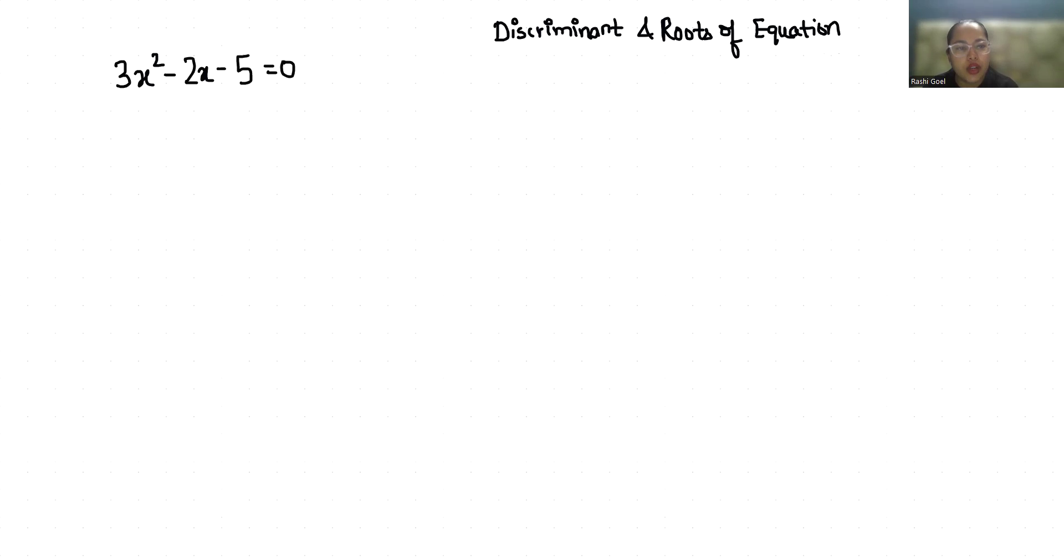solve this quadratic equation 3x squared minus 2x minus 5 equals 0 and we are going to find the discriminant and roots of the equation. So let's start with today's video solution.